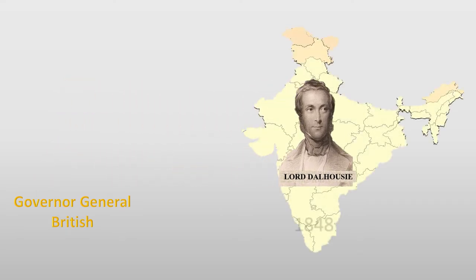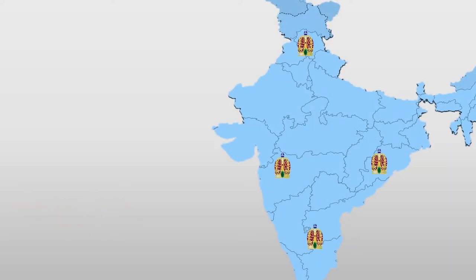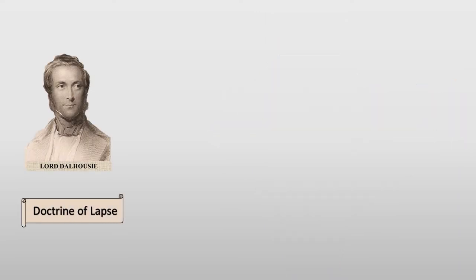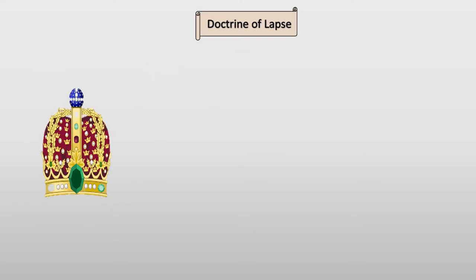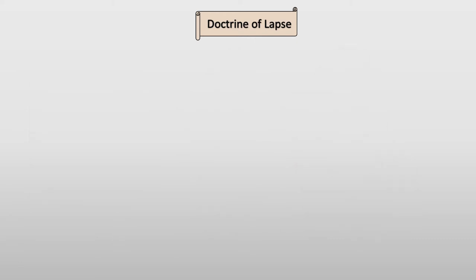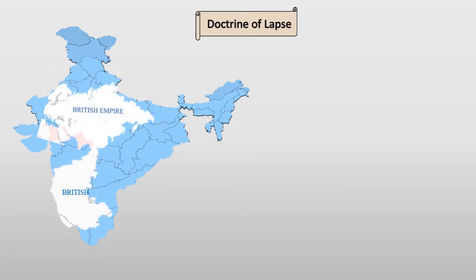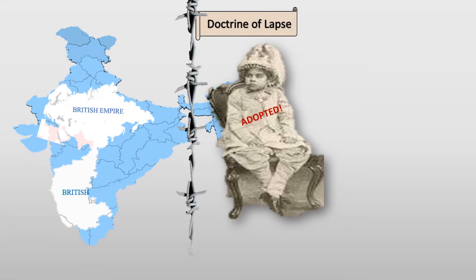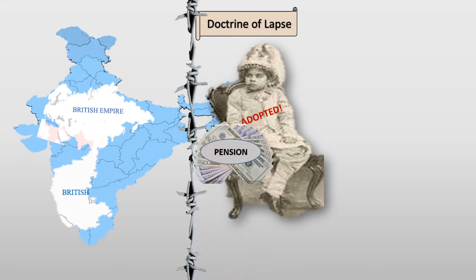Dalhousie, the Governor-General of British India, arrived in 1848 and tried to join Indian states ruled by Indian kings with the British Empire. He followed the Doctrine of Lapse policy, according to which if a king died without a natural son or had adopted a son, that state was added to British territories. Adopted sons of any king were not allowed to rule the kingdom and were only eligible to receive pensions.